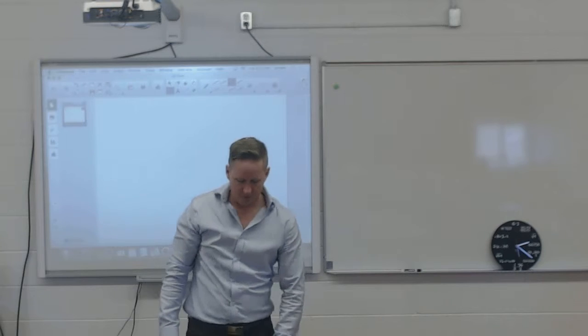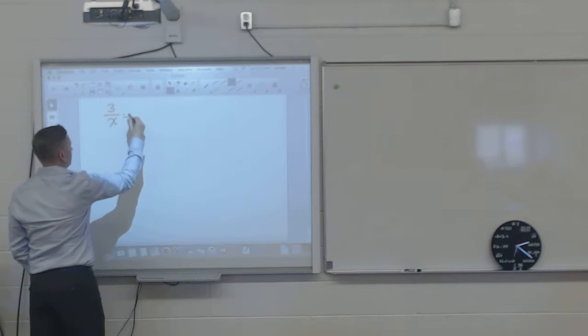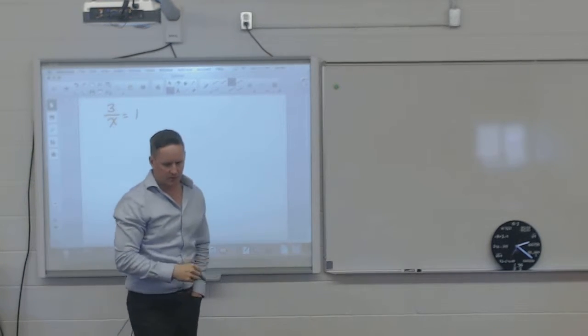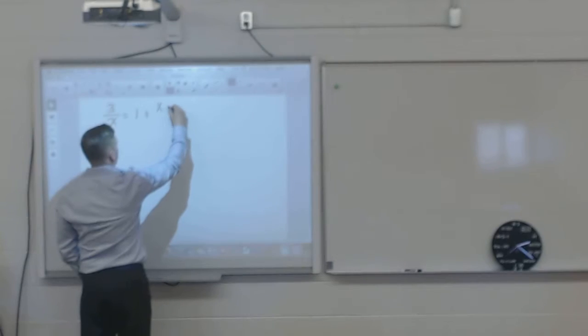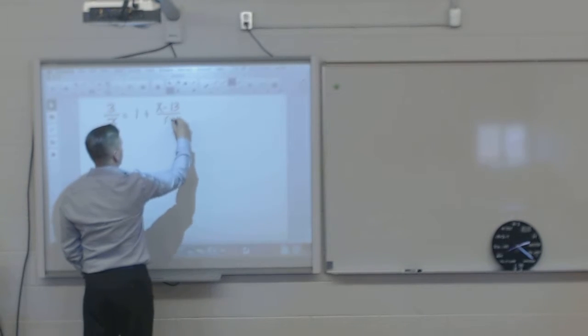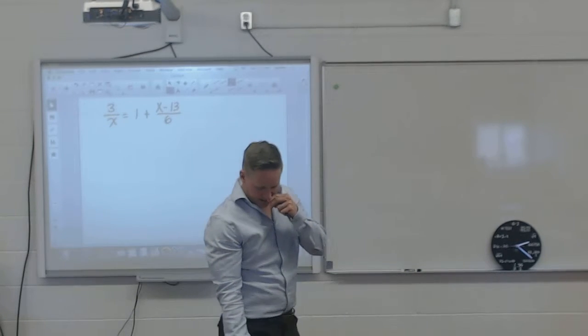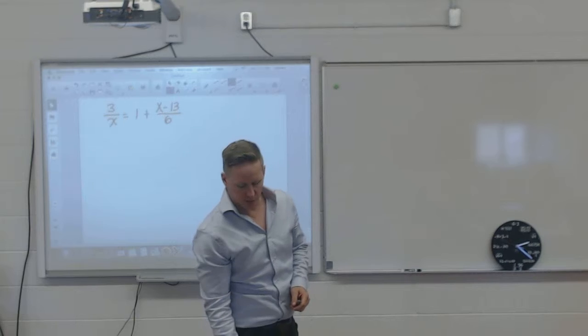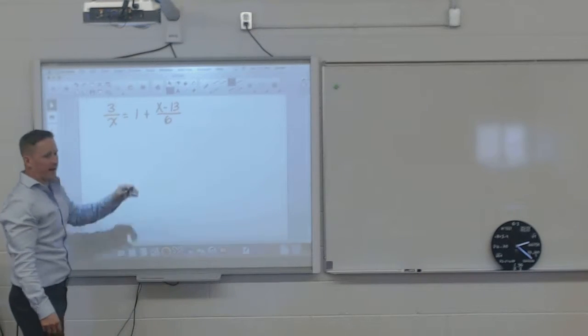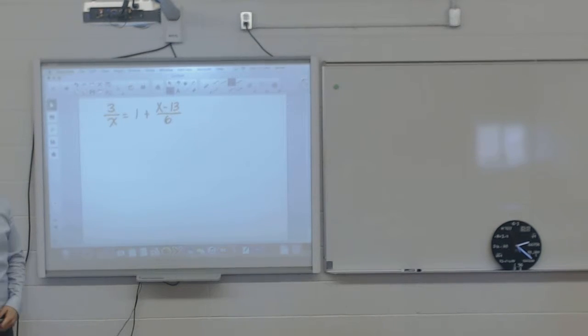So I've got 3 over x equal to 1 plus x minus 13 over 6, right? Okay, so we did this last year, so I'm going to do it the same way we would have approached it last year. The first thing I'm going to do is make sure everything's factored down to your minimums. That's the easiest way to start the question.